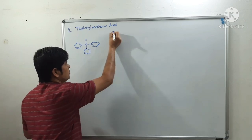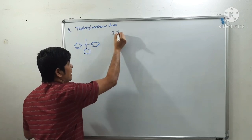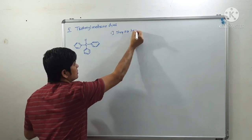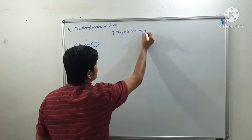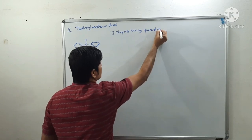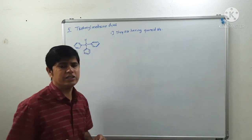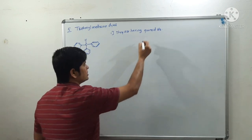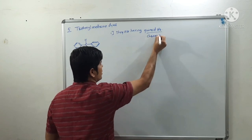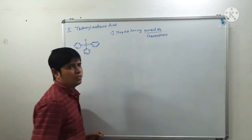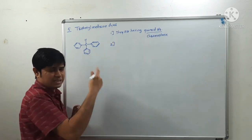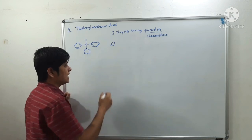One more characteristic of these dyes is that they possess a quinoid structure. These dyes attain a quinoid structure in their molecule, and that quinoid structure acts as the chromophore. So triphenyl methane dyes are classified into three categories.